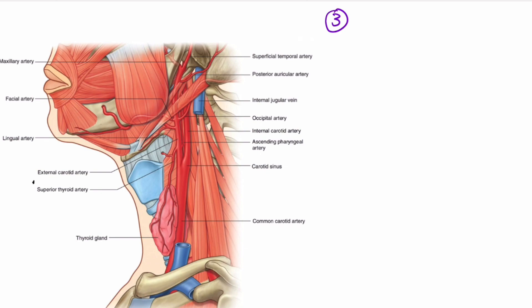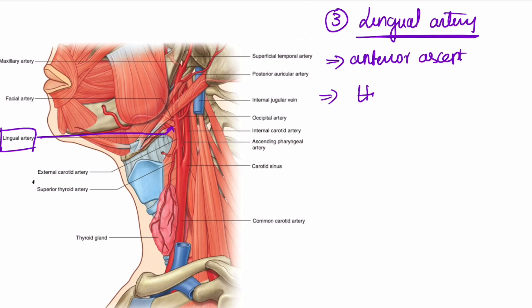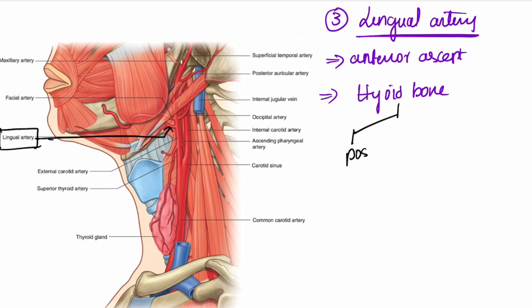The third branch is the lingual artery, which arises from the anterior aspect of the external carotid artery near the hyoid bone — at the level of the hyoid bone. The lingual artery supplies the posterior tongue.